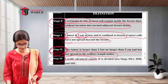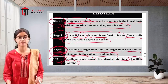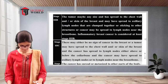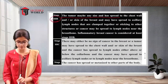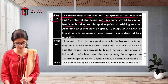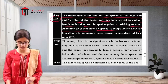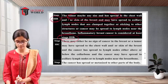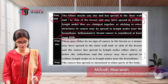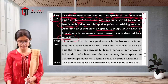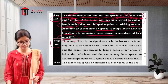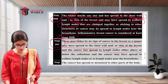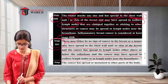Stage 3 is locally advanced cancer, divided into stages 3a, 3b, and 3c. In stage 3b, the tumor may be any size and has spread to the chest wall or skin of the breast, or to clumped axillary lymph nodes, or to lymph nodes near the breast bone. Inflammatory breast cancer is at least stage 3b. In stage 3a, the cancer has spread to the chest wall. In stage 3c, there may be no sign of cancer in the breast but the disease has spread to the chest wall, skin, and lymph nodes above or below the collar bone.